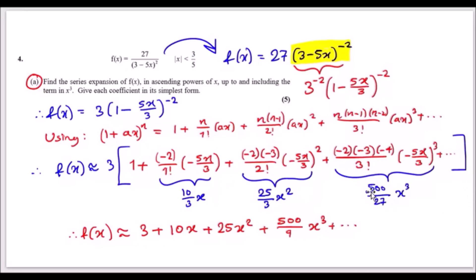To simplify each coefficient, use a calculator — omit the x and just calculate the numerical part, then attach the correct power of x. The result, multiplied through by 3, gives: 3 + 10x + 25x² + (500/9)x³.